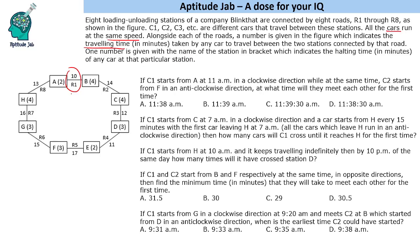For example, R1 takes 10 minutes from A to B, R2 takes 14 minutes from B to C, R3 takes 12 minutes from C to D. Similarly, there is a number given with the name of the stations in brackets which gives the halting time of a car at that particular station. For example, a car at A will halt for 2 minutes. If it reaches B, it will halt for 4 minutes. If it reaches C, it will halt for 4 minutes.